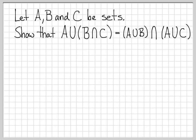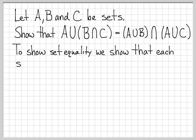In this problem, we're going to show that two sets are equal to each other. The sets we're working with are A union B intersect C, and A union B intersected with A union C. Often when we want to show that two sets are equal, what we do is show that each set is a subset of the other.